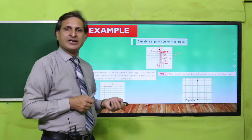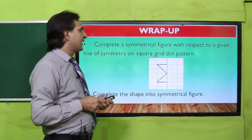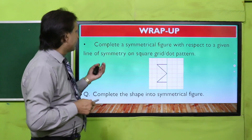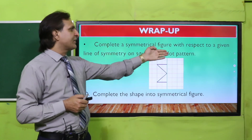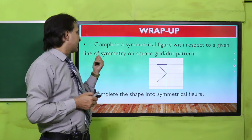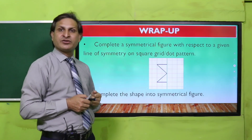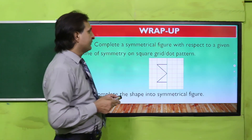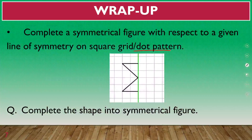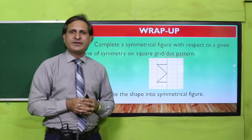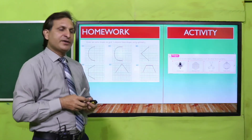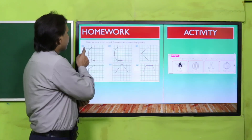अब आ जाएं wrap-up की तरफ। आज का lesson था: complete a symmetrical figure with respect to a given line of symmetry on a square grid या dotted pattern। यह worksheet है — हर student ने class में ही complete करनी है। Complete करने के बाद teacher को submit करवा दें।